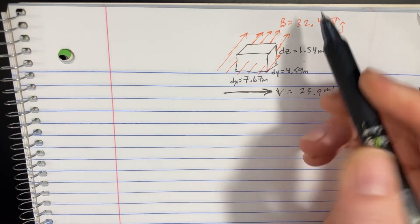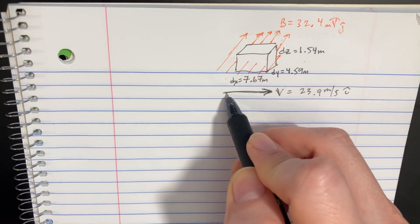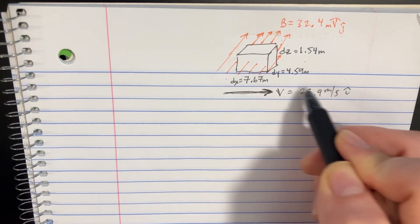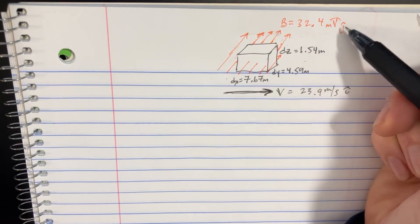We've got this conducting box that's moving through a magnetic field. The velocity of the box is going to be in the I direction, and the magnetic field is in the Y direction, the J direction.